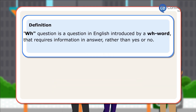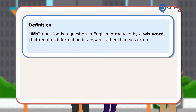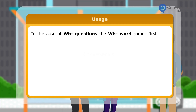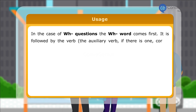Definition: A WH-Question is a question in English introduced by a WH-word that requires information in answer, rather than yes or no. Usage: In the case of WH-Questions, the WH-word comes first. It is followed by the verb — the auxiliary verb, if there is one, comes first — and then by the subject.